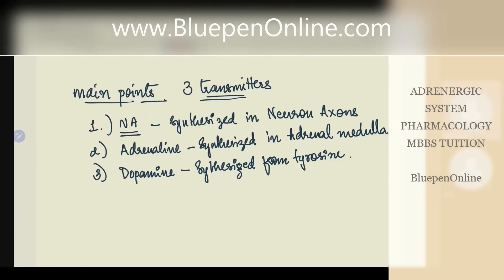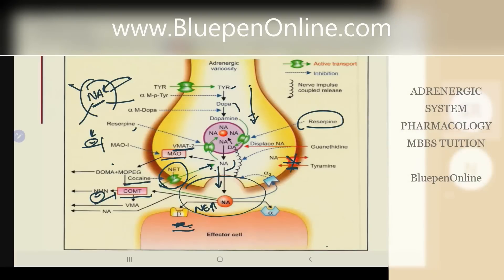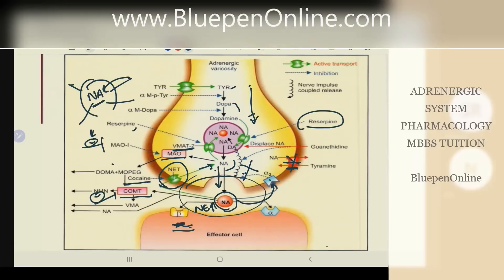Noradrenaline is synthesized in neuron axons while adrenaline is synthesized in the adrenal medulla. Dopamine is a precursor of these two. If there is too much noradrenaline in the synaptic cleft, it goes back and sits in the alpha-2 receptor, which tells the neuron to stop producing more noradrenaline.